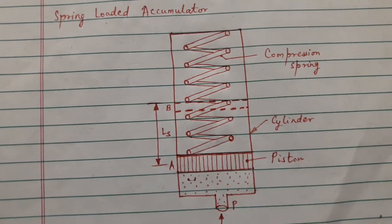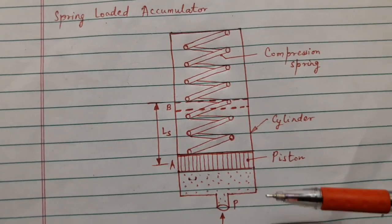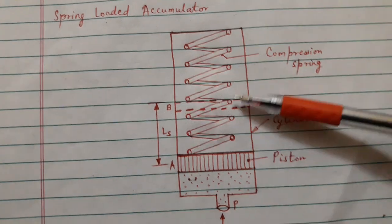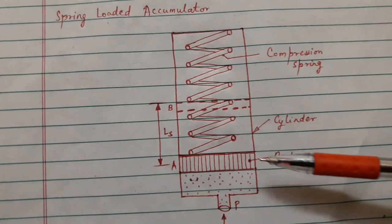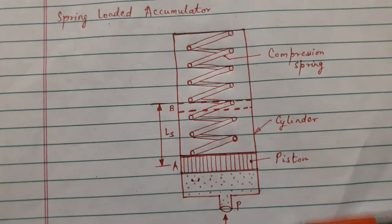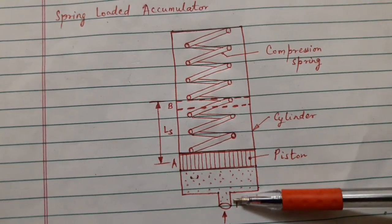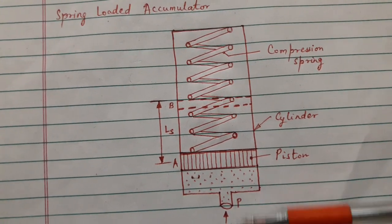If demand exists, hydraulic oil under pressure, the spring starts expanding thereby pushing the piston downwards and the pressurized oil will come out through port P.